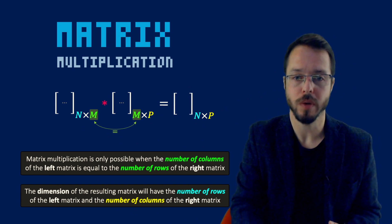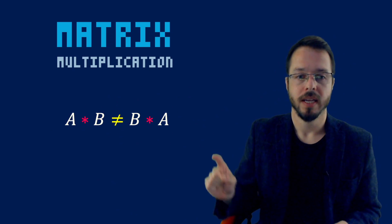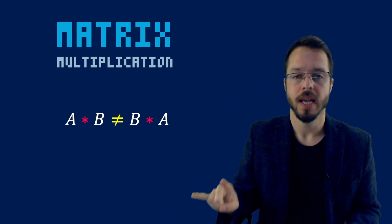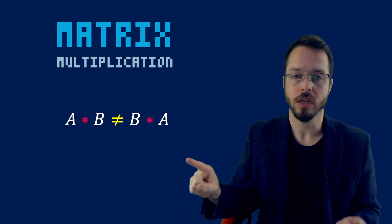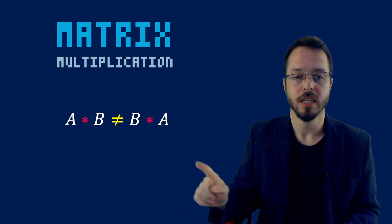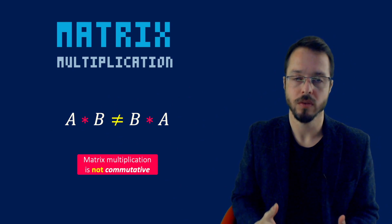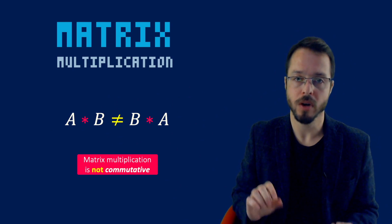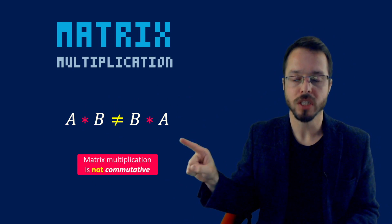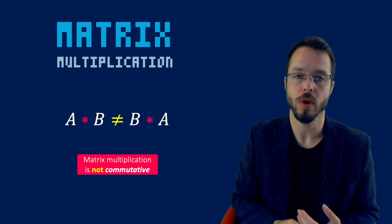Something super important: if you have a matrix multiplication between matrices A and B, A times B is not equal to B times A. It is not always equal. Matrix multiplication is not commutative. Always remember this — if you ever have to perform checks in the future, matrix multiplication is not a commutative operation.